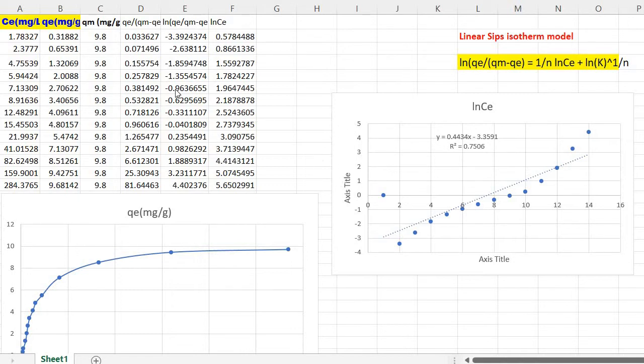So in order to fit, I have taken my data CE and QE. SIFS isotherm model can be written as ln QE divided by QM minus QE equal to 1 by N, ln CE plus ln K to the power 1 by N.